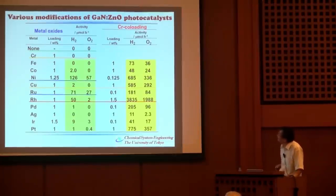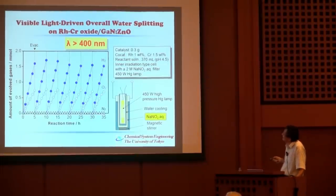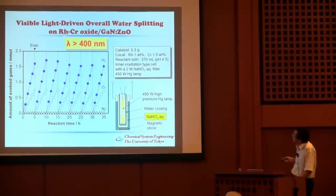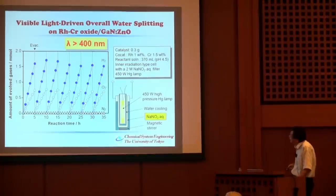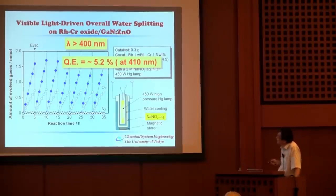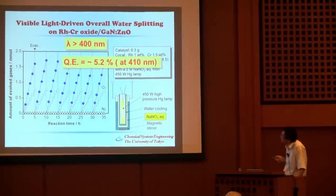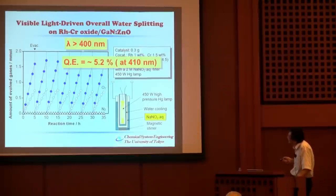Let me focus on the rhodium-chromium combination. This is a typical time course of overall water-splitting under visible light irradiation on GaN:ZnO modified by Rh/Cr mixed oxide. Over more than 30 hours we obtain steady stoichiometric hydrogen and oxygen evolution. The quantum efficiency is about 5.2% at 410 nm. Compared to about 70% under UV irradiation, this number is not yet satisfactory, and we are working to improve it.